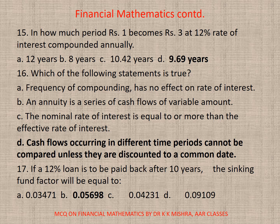Question 16: Which of the following statements is true? The correct option is D — cash flows occurring in different time periods cannot be compared unless they are discounted to a common date. Question 17: If a 12% loan is to be paid back after 10 years, the sinking fund factor will be equal to — correct option is B — 0.0569.